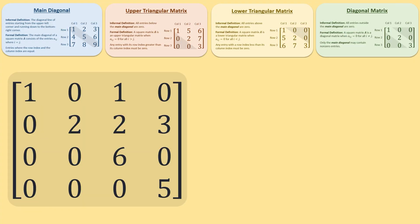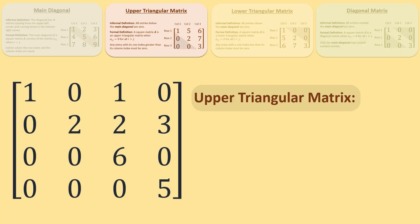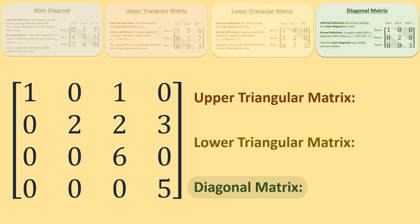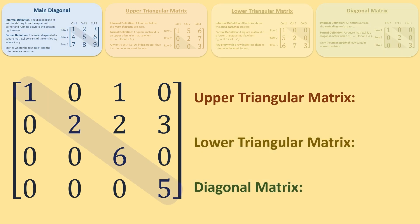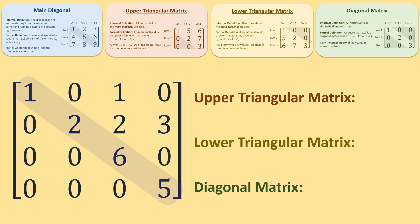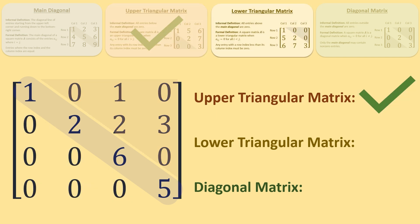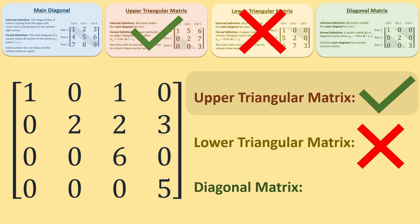Consider this square matrix. Is it upper triangular, lower triangular, or a diagonal matrix? Here is the main diagonal. Are all the values below the main diagonal zero? Yes, so this matrix is upper triangular. Are all the values above the main diagonal zero? No — there are some nonzero entries above the main diagonal, so this matrix is only an upper triangular matrix.